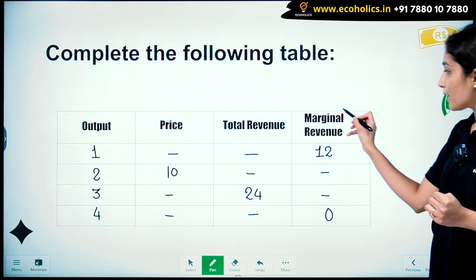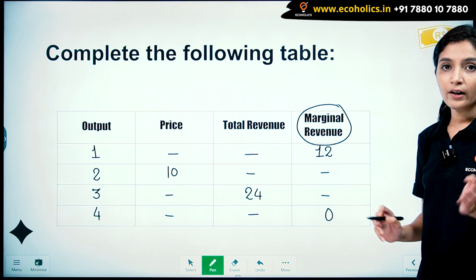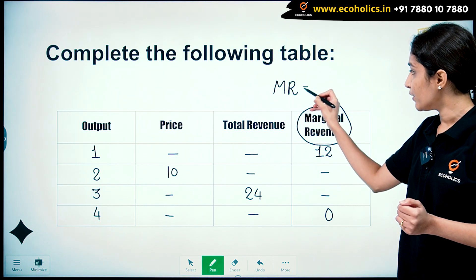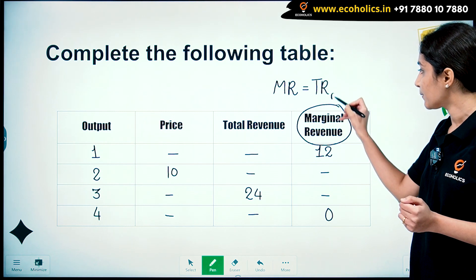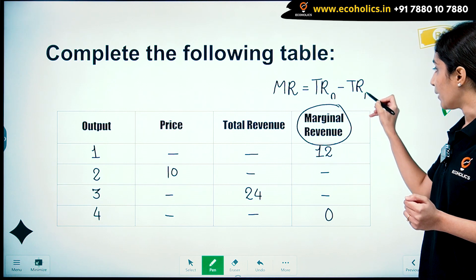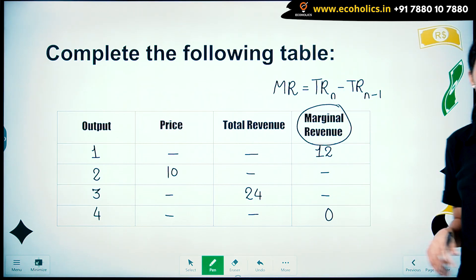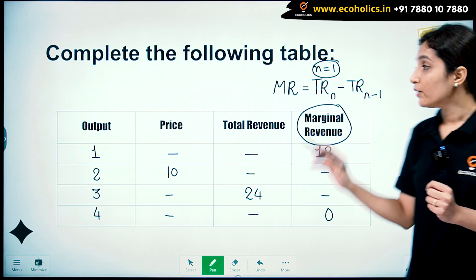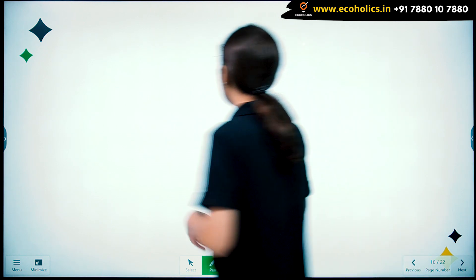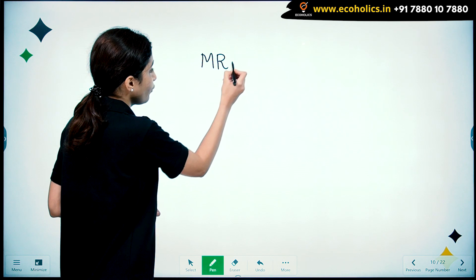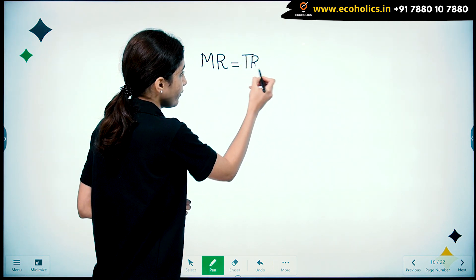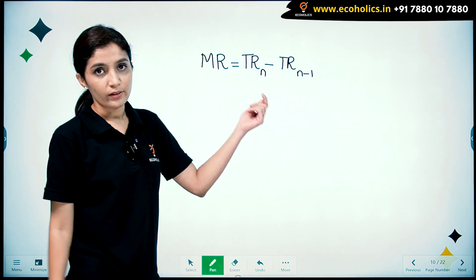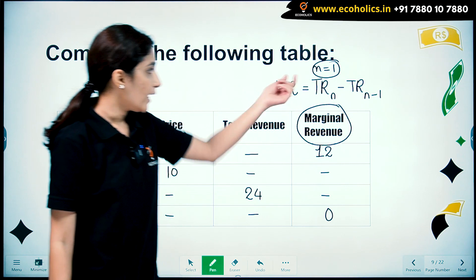In the first case our marginal revenue is given as 12. The formula for marginal revenue is: MR = TR of n units minus TR of n minus 1 units. In this case our n is equal to 1.